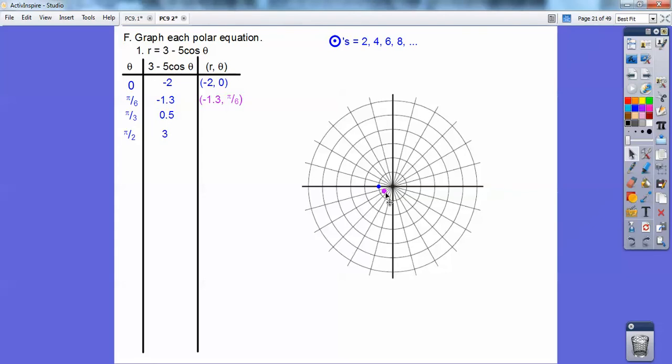And then 0.5 at pi over 3. 0.5 at pi over 3 is over here. So so far, it's doing this, and it looks like it's looping around, and it's coming back up, and then radius 3, there's my radius 3 right there. So it started here, and it went over here, and it looped around, and now it's going up right there. Let's keep going.